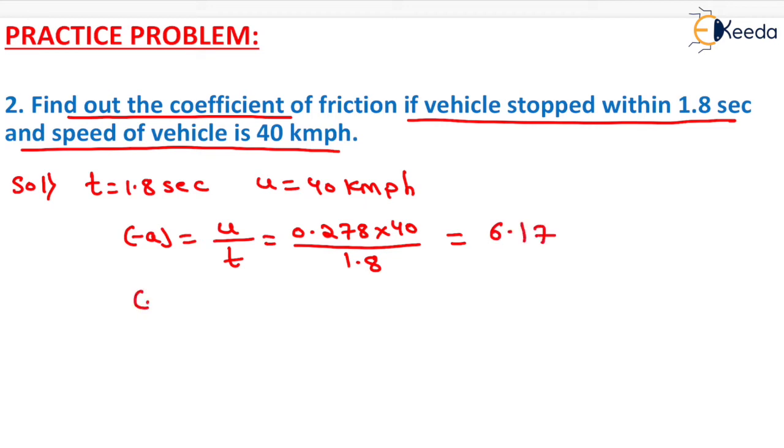Now we know that -a equals g times f, so we can determine f equals -a divided by g. The value of -a is 6.17 and g equals 9.81. Solving this, we get f equals 0.629, which is the coefficient of friction.